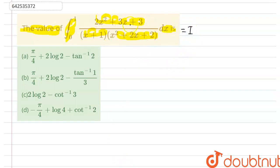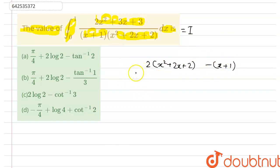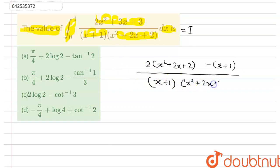Now, the numerator of the integral can be written as 2(x² + 2x + 2) minus (x + 1). This gives us 2x² + 3x + 3 in the numerator, divided by (x + 1)(x² + 2x + 2) dx, with integration from 0 to 1.